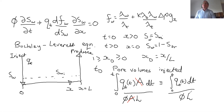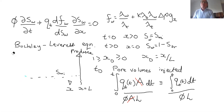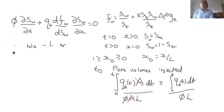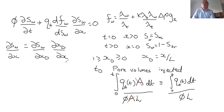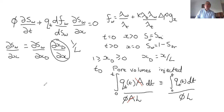Let's now put that into the equation and see what we get. For DSW/DX, by the chain rule this is DSW/DXD times DXD/DX, and DXD/DX is one over L. So that term simply becomes DSW/DXD times one over L.